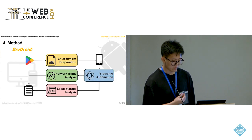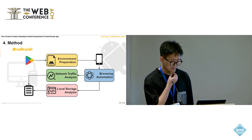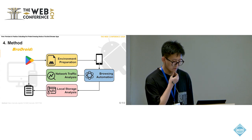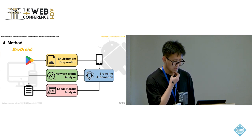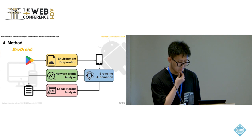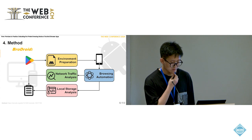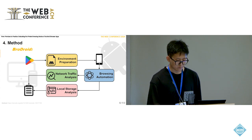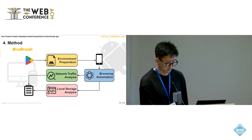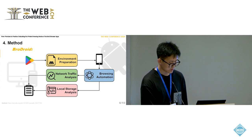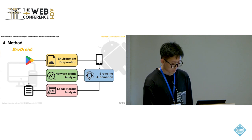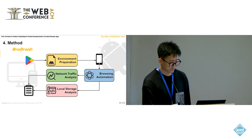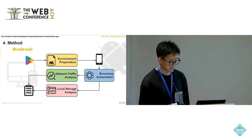Specifically, BroadDroid takes a browser app as input and outputs a report of detection results corresponding to the predefined rules. The detection framework mainly consists of four parts: environment preparation, browsing automation, network traffic analysis, and local storage analysis.